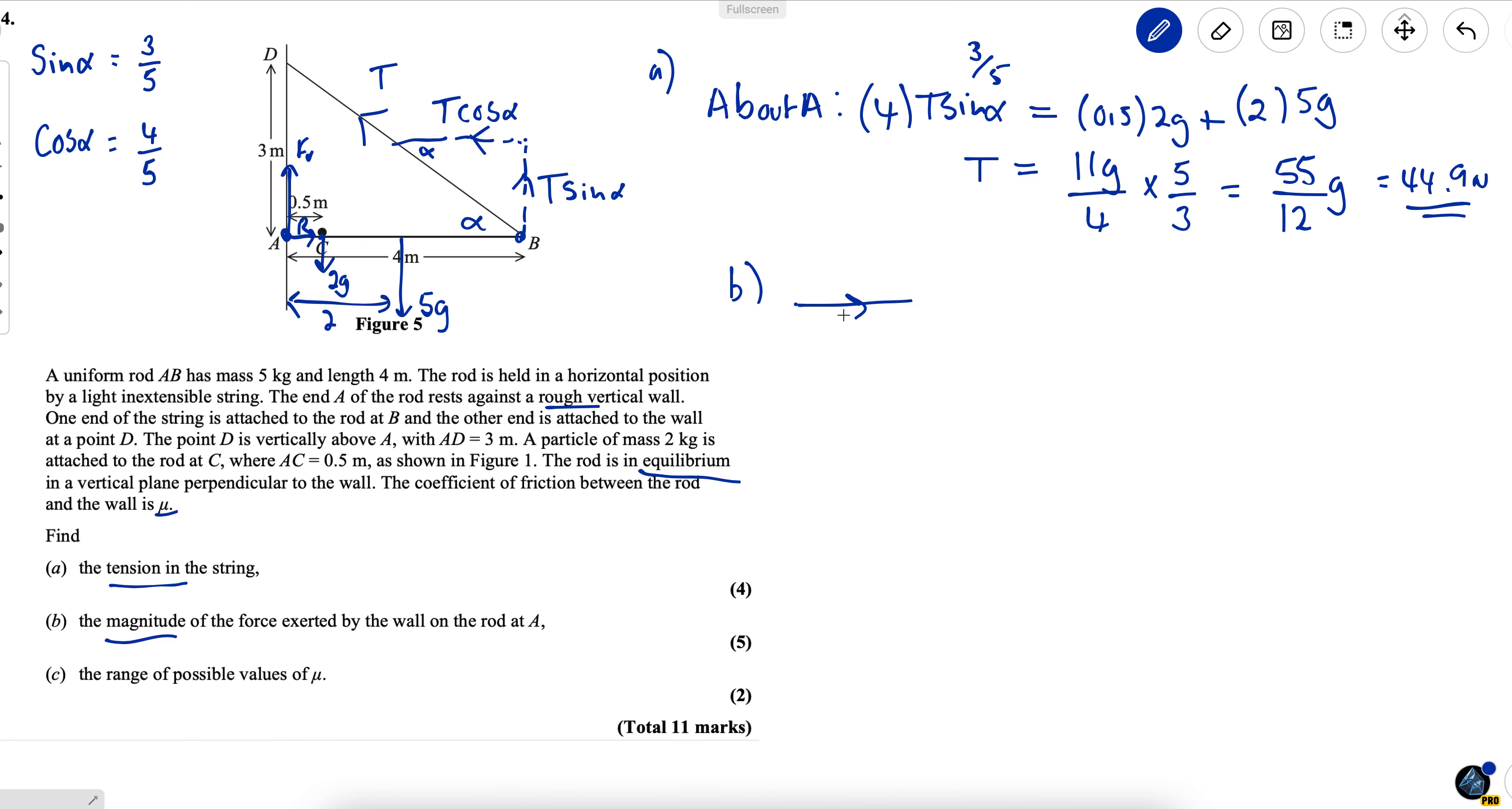So we have reaction going to the right and friction going upwards and that means the resultant will be like this and that's the resultant force. I've got to find the magnitude of this which means I'll use these two values and use Pythagoras. First of all I need to find the two values clearly.